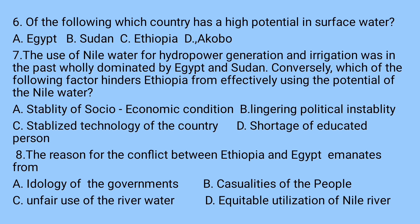Question number seven: The use of Nile water for hydropower generation and irrigation was in the past wholly dominated by Egypt and Sudan. Conversely, which of the following factors hinders Ethiopia from effectively using the potential of the Nile water? a) Stability of the socio-economic condition, b) lingering potential instability, c) stabilized technology of the country, d) shortage of educated persons.